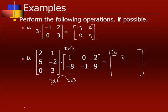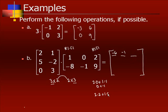For row 1 times column 2, you have 2 and 1 times 0 and negative 1. You multiply the numbers but add the entries, so that's 2 times 0 plus 1 times negative 1, which is 0 plus negative 1, which is negative 1. For row 1 times column 3, that's 2 times 2 plus 1 times 9, so 4 plus 9 equals 13.